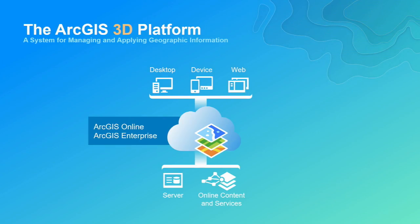How does 3D in the browser work in the ArcGIS platform? The ArcGIS platform is a system for managing and applying geographic information — a platform for mapping and location. The core is ArcGIS Online and the enterprise, powered by server in the enterprise and by online services in the cloud. You can consume it from desktop machines, native devices, or from the web.